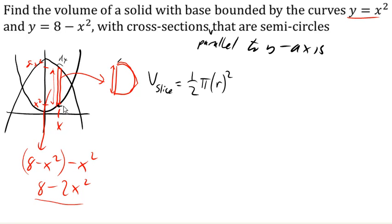In this particular case, what is the radius of this circle? Well, the radius is gonna be half of this entire length, right? This entire length is the diameter. So the radius is going to be half of this 8 minus 2x quantity.